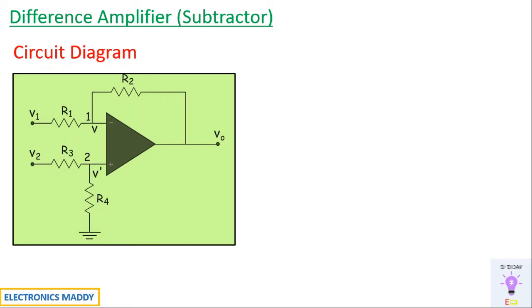This is a circuit diagram of a difference amplifier, also referred to as a subtractor. The reason is simple: the output voltage will be the difference between the input signals V1 and V2, that is, Vout will be equal to V2 minus V1 or V1 minus V2 based on the magnitudes of V1 and V2.